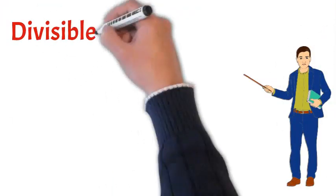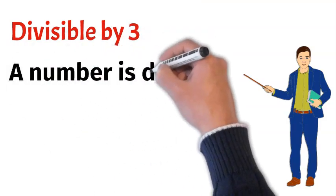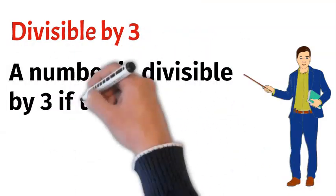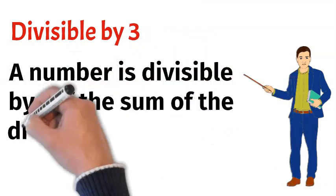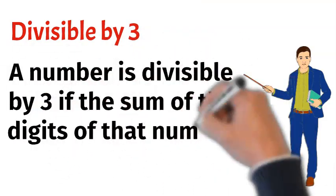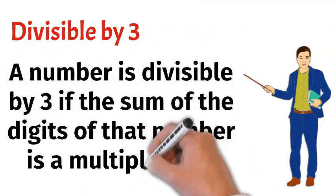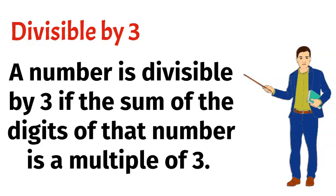Divisible by 3. A number is divisible by 3 if the sum of the digits of that number is a multiple of 3.